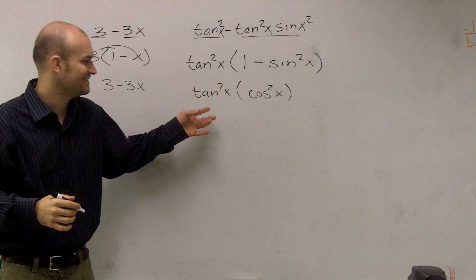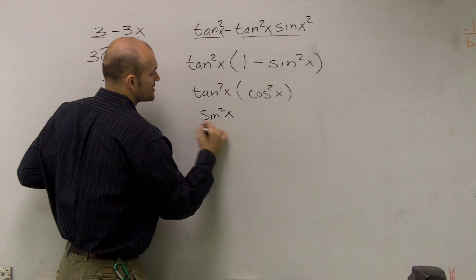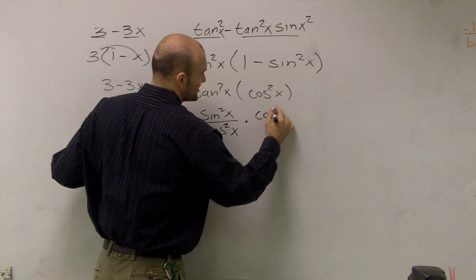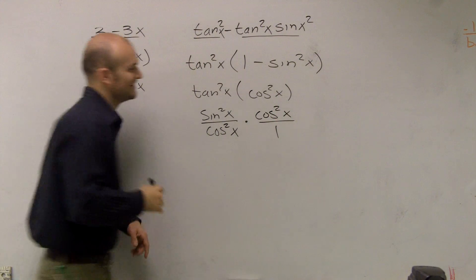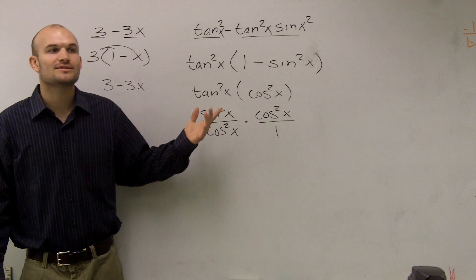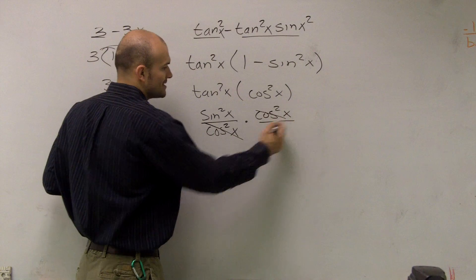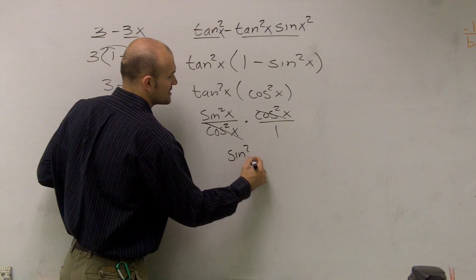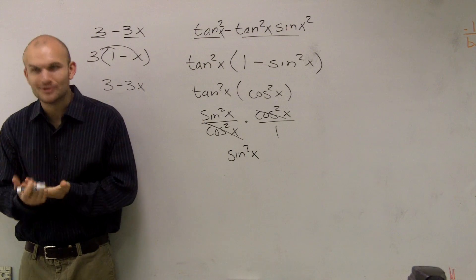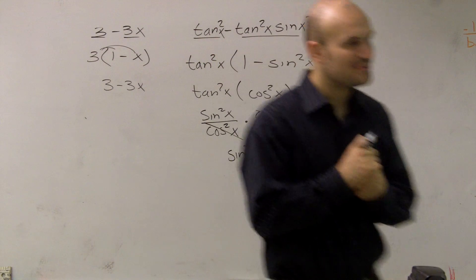Then I can rewrite tangent squared as sine squared of x over cosine squared of x. I rewrote tangent as sine over cosine, and the reason why that's so helpful is because now I can cancel those out, and I'm just left with sine squared of x. Isn't that cool? Isn't that beautiful? That is beautiful mathematics.